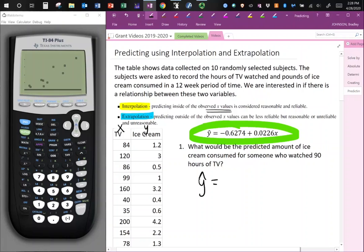So y hat will be our predicted y value for someone that watched 90 hours of TV. Now I'm rewriting my equation. And instead of x, I will be placing in a value of 90 hours of TV, I will be placing 90 in that spot.